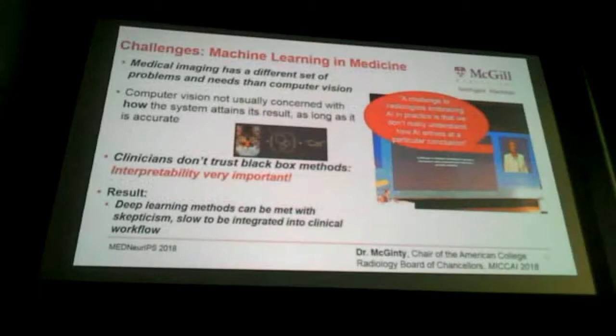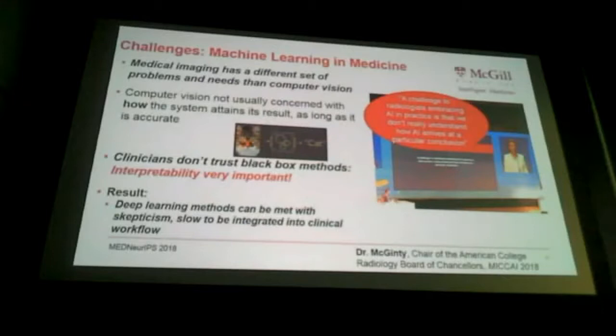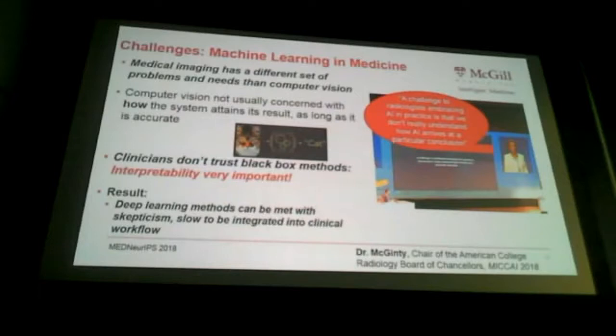In computer vision we're not so concerned with how the system attains its result as long as it's accurate — if we have almost 100% accuracy recognizing a cat, we're happy, whether it was the nose or the ear that determined it. But clinicians have slightly different needs. As Dr. McGinty, chair of the American College of Radiology, stated in her keynote at MICCAI this year: a challenge to radiologists embracing AI in practice is that we don't really understand how AI arrives at a particular conclusion. Interpretability is incredibly important for radiologists to integrate these methods into their pipeline.